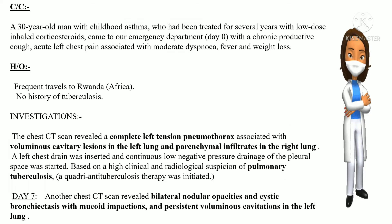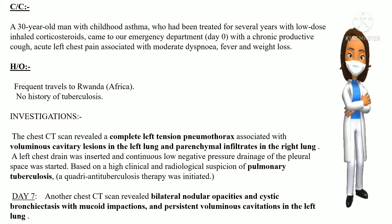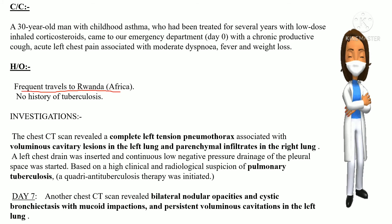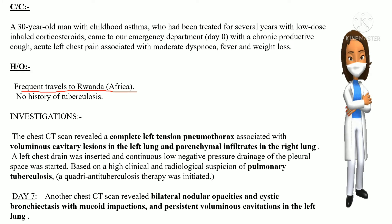Now let's discuss the case. A 30-year-old man with a history of childhood asthma, treated for several years with low-dose inhaled corticosteroids, came to an emergency department with chronic productive cough, acute left chest pain, moderate dyspnea, fever, and weight loss. There was a history of frequent travel to Africa with no history of tuberculosis. Chest CT scan revealed a complete left tension pneumothorax associated with a voluminous cavitary lesion in the left lung and parenchymal infiltrates in the right lung.